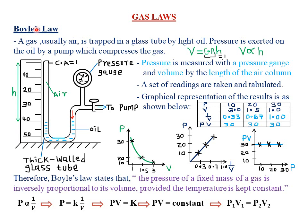Under Boyle's Law, a gas — usually air — is trapped in a glass tube by light oil. Pressure is exerted on the oil by a pump, which compresses the gas. Pressure is measured with a pressure gauge, and the volume is measured by the length of the air column.